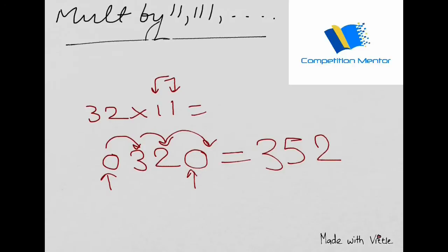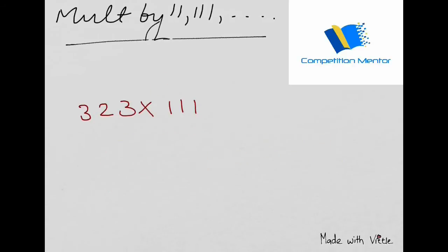When you have to multiply 323 into 111, you will put two zeros by the side because there are three ones. Now you will not just keep on adding with the next number but in the pairs of three. So zero plus zero plus three is three.